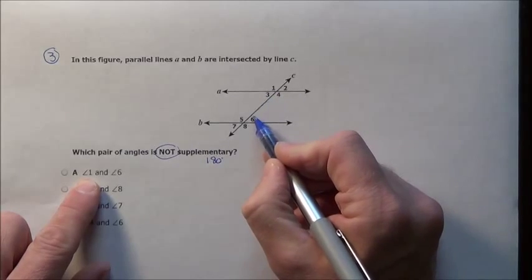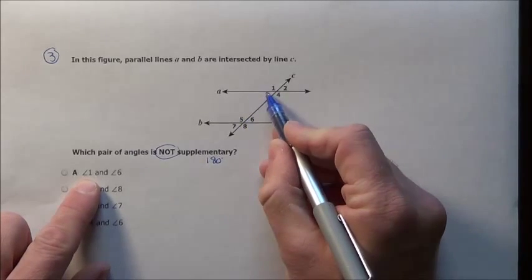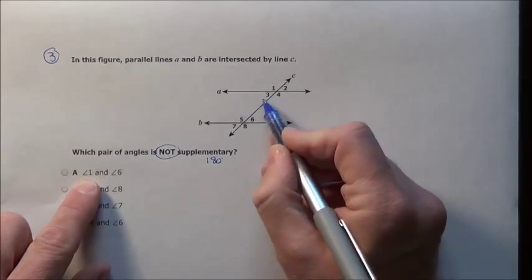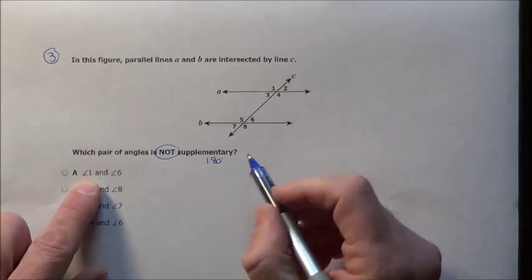You can see that's an acute angle, that's acute, so they're equal. This is obtuse, that's acute, so those will likely add up to 180. Let's see what we have.